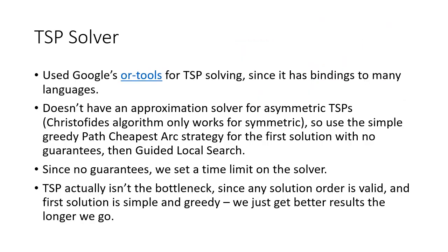For the Traveling Salesman solver, I used Google's OR-Tools, since it has bindings to many languages including C#. It doesn't have an approximation solver for asymmetric TSPs, so we use heuristics - starting with the greedy cheapest arc strategy for the first solution, then using guided local search to refine it. Since there are no guarantees, we set a time limit on the solver and get better results the longer we let it run. TSP isn't actually the bottleneck since any solution order is valid - a bad ordering just means tests take longer. There are approximation solvers like Christofides' algorithm giving three-halves of optimal, but those only work for symmetric TSPs, and transforming an asymmetric TSP to symmetric is somewhat complicated.